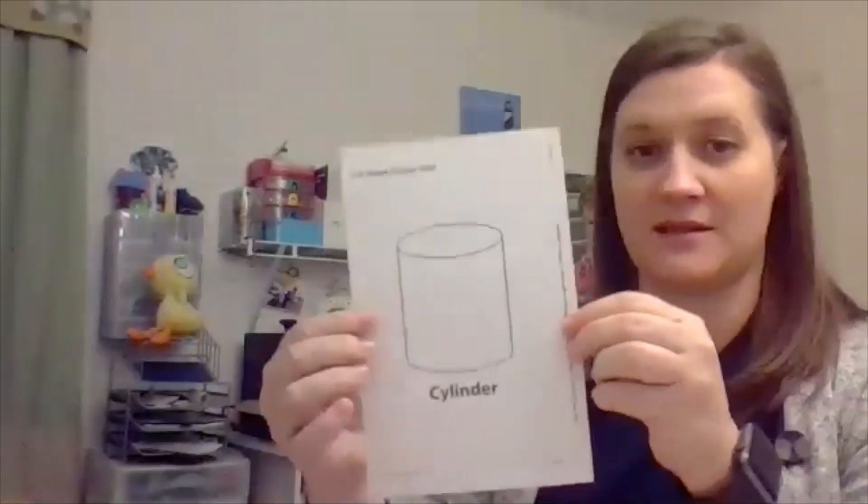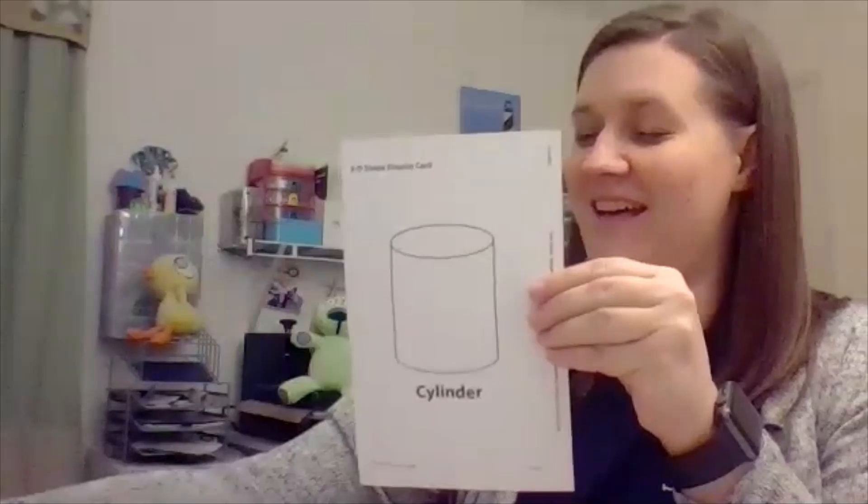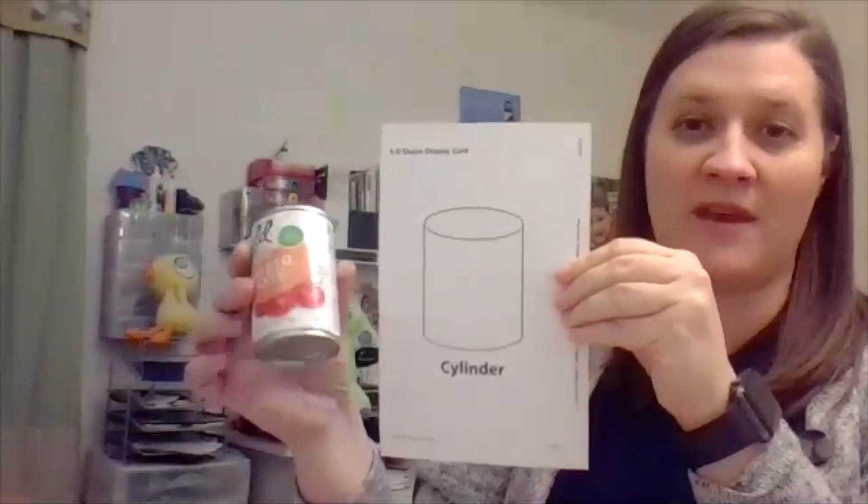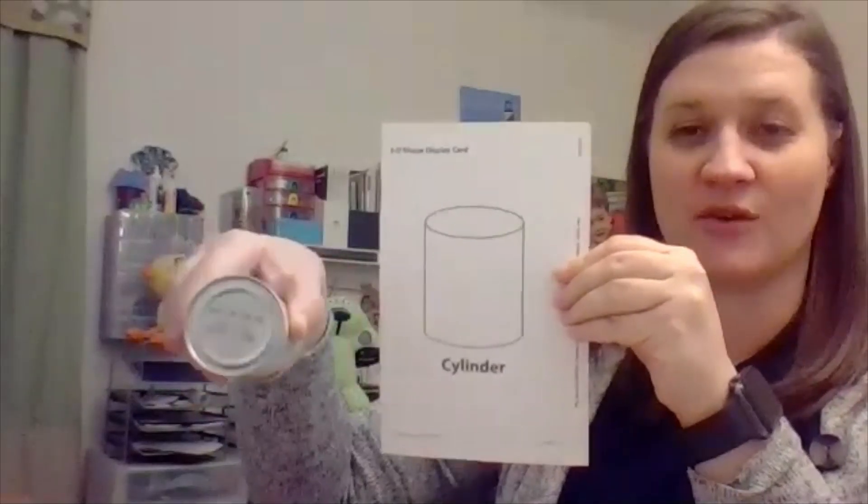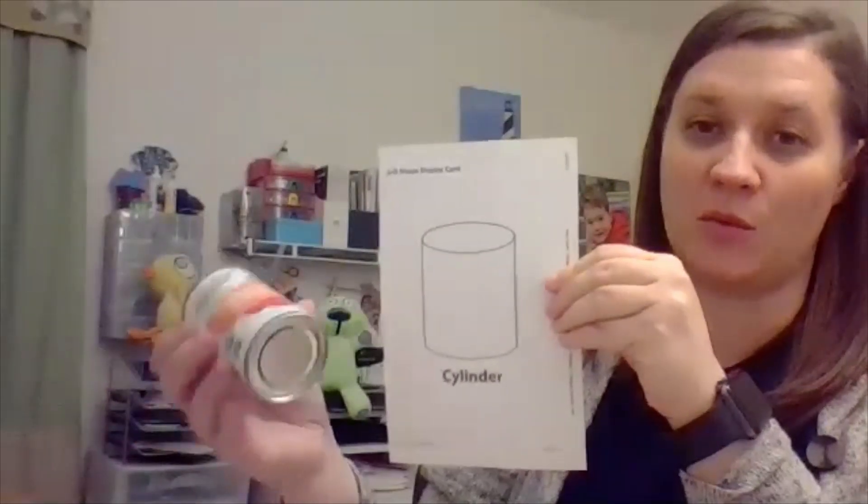Here's my next shape. Take a look at that card. And I found a can. This shape is a cylinder. It has circles on the top and the bottom and then a big curve so it would roll.